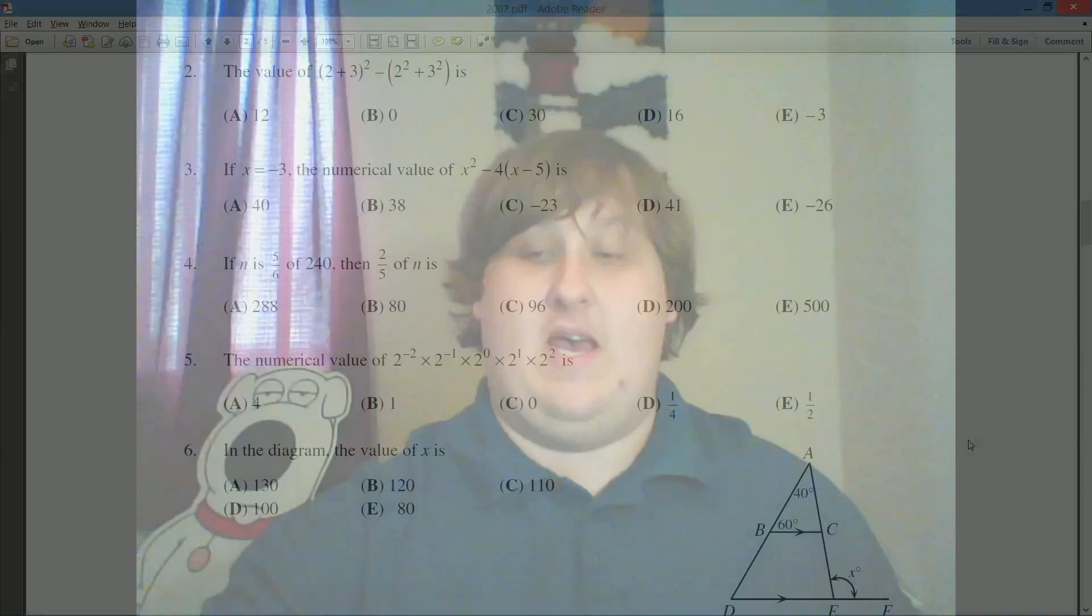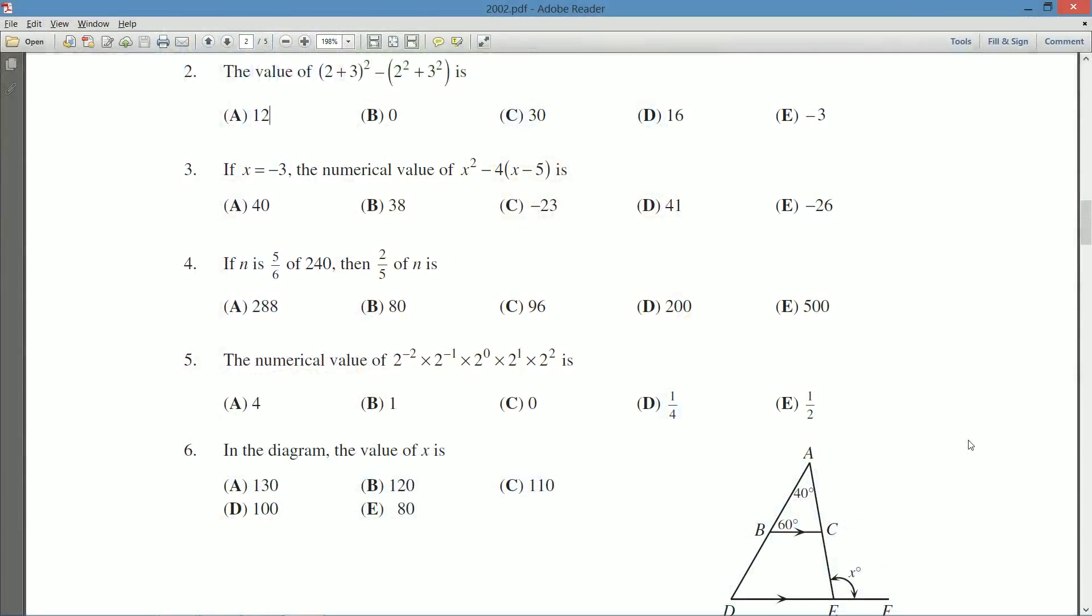So what does question three have to say? If x is equal to negative three, the numerical value of x squared minus four times x minus five is?